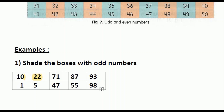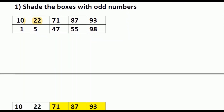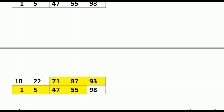After 93 finally comes 98. And 98 ends with the number 8, and we know that 8 is an even number, so we cannot color the number 98. And finally the answer looks like this. The odd numbers here are 71, 87, 93, 1, 5, 47, and 55.